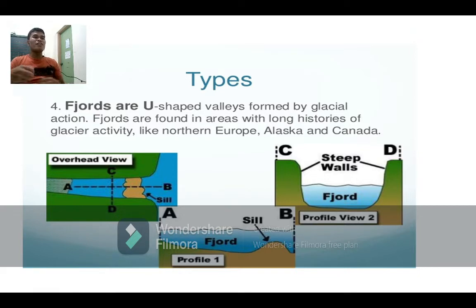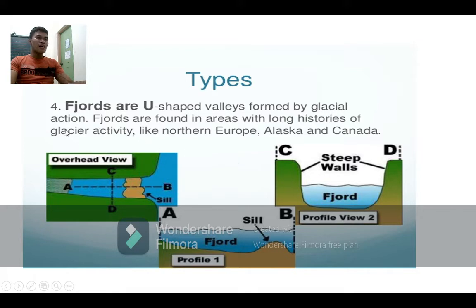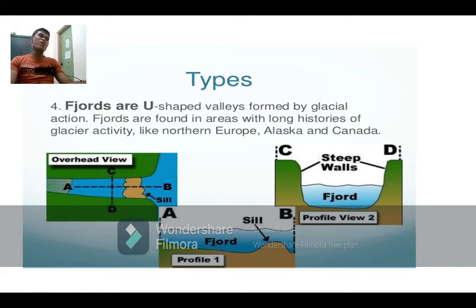In this area of Northern Europe, you can see the fjord estuary. Looking at our picture, you can see the U-shape formed. This fjord estuary was formed because of glacial activity — what we call glacial action, which is something like erosion of snow or ice.